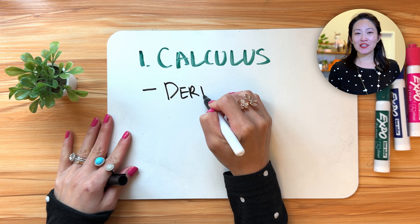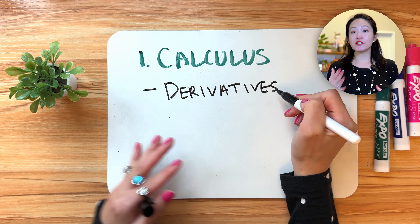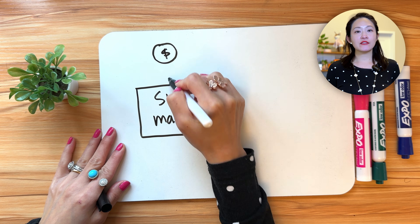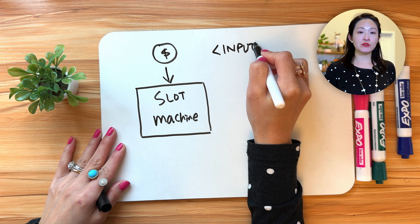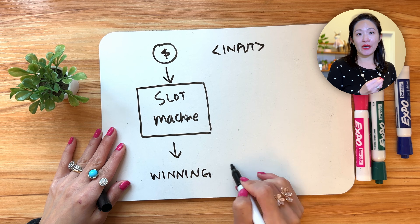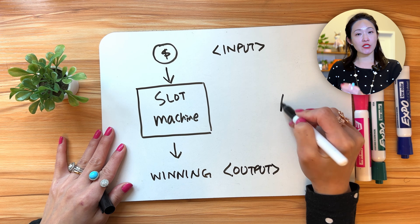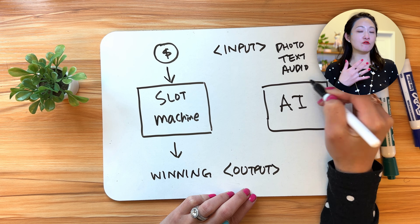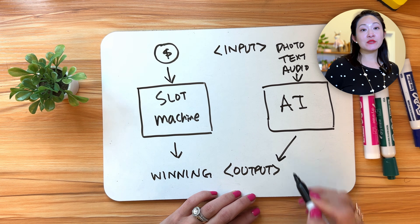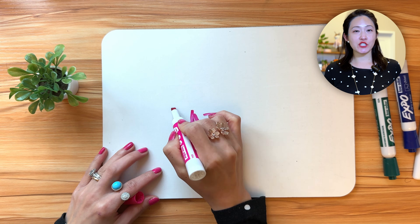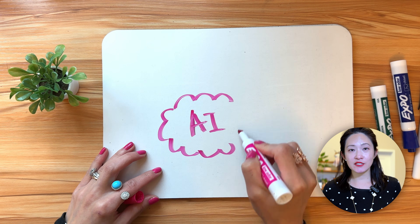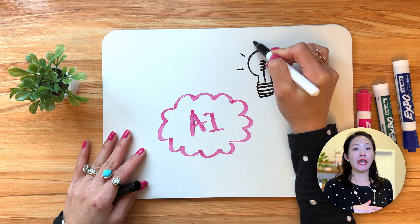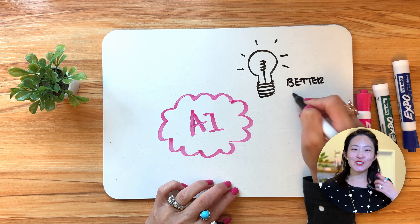Let's start with derivatives. To make it super simple, imagine a slot machine. When you put in a coin, that's your input. Sometimes you win big, sometimes small, and sometimes you lose. Derivatives help you understand how changing your bet will affect your winnings. In AI, it works the same way. Instead of coins, you give the AI information like a photo or some text. Derivatives help the AI understand how small changes in how it processes that information affects its accuracy. Just like you would adjust your betting strategy, the AI adjusts its thinking to get better results.